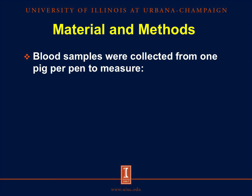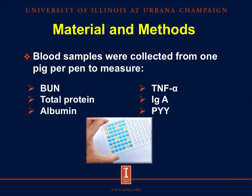Blood samples were collected from one pig per pen that was at the average weight of the pen. These samples were used to measure BUN, total protein, and albumin. Also, we used ELISA kits to measure the concentration of TNF-alpha as an indicator of inflammatory response and prebiotic effect, immunoglobulin A as an indicator of immune response, and the concentration of peptide YY as an indicator of homeostasis of feed intake and energy.